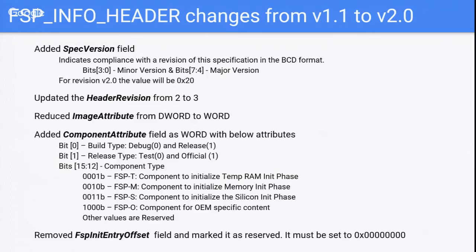Component types identify whether a binary is T, M, or S when split into three binaries. An OEM type is also defined for adding custom data to distribute. FSP serves two purposes: as an IP container to enable the open-source enabling model, and to simplify the enabling process. If you have a socket-compatible next-generation silicon, ideally you swap the FSP—if APIs are the same and configuration data matches, you should bring up new silicon without changing much at the board level.